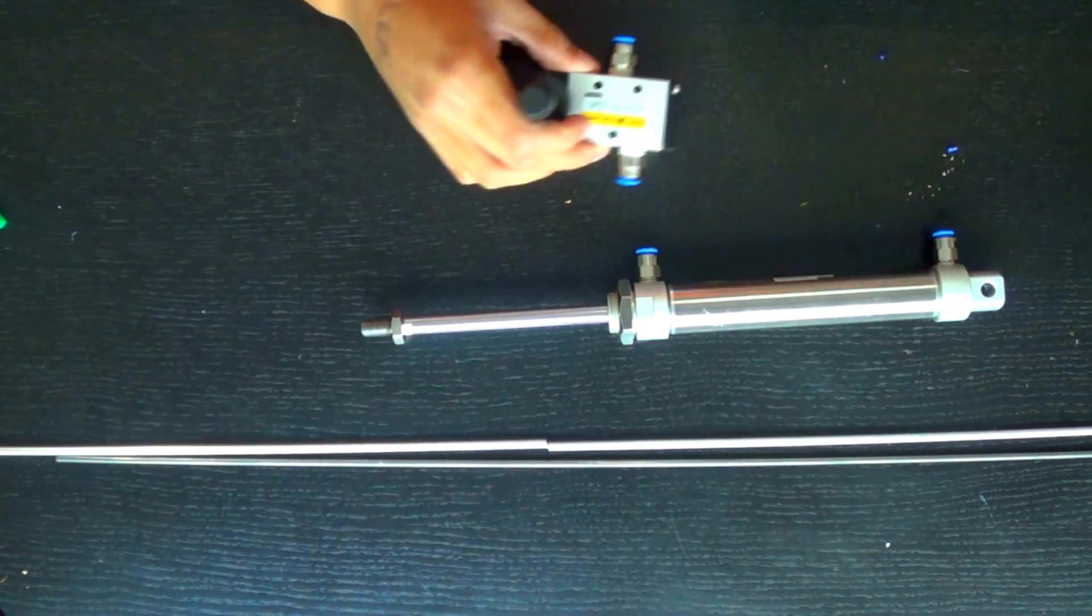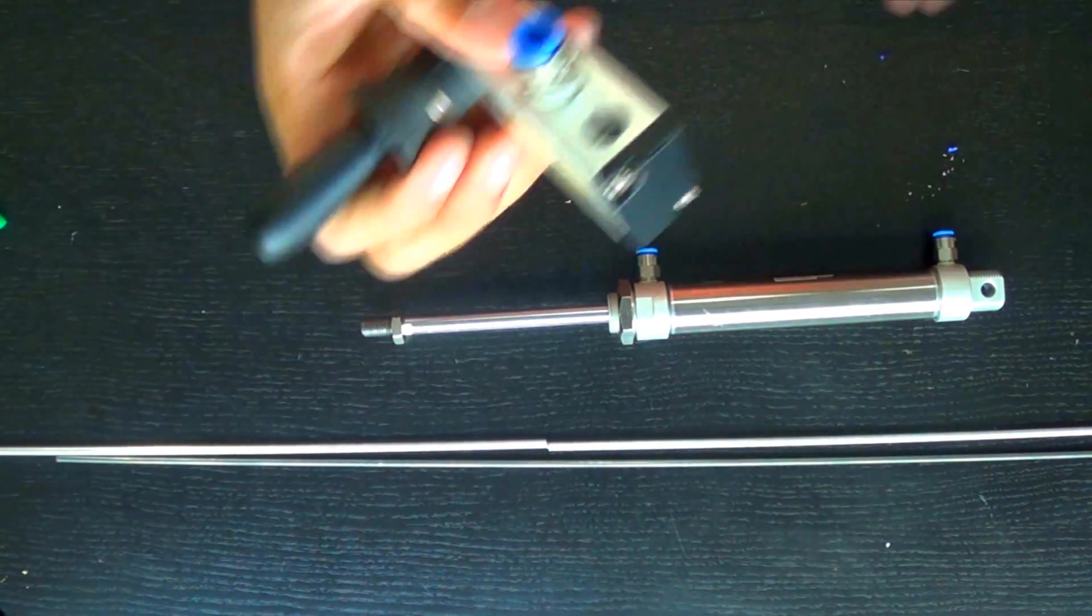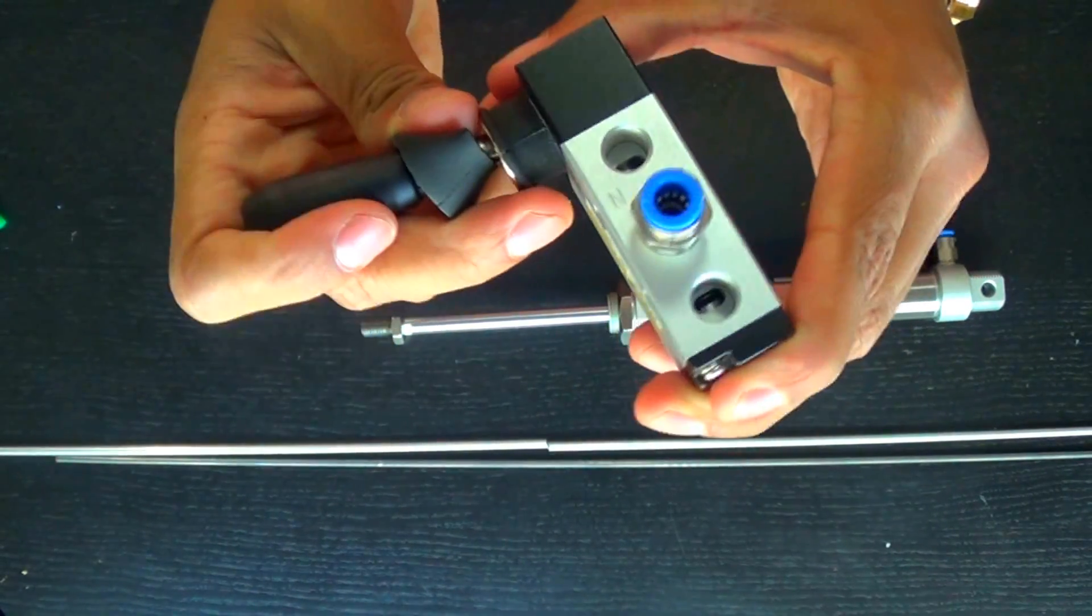So the materials here, I have some tube there. And here is a valve that I got from Princess Auto, which just controls the flow of air.